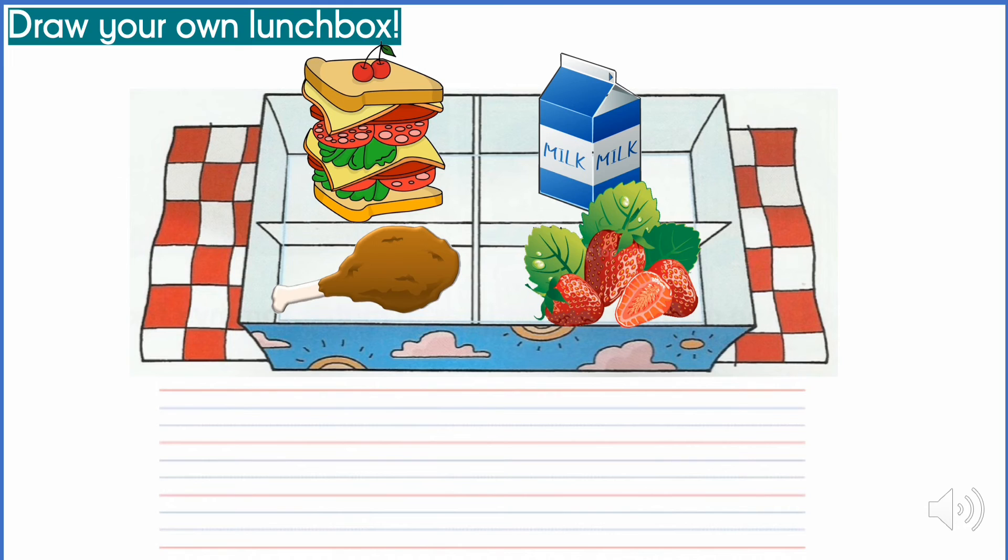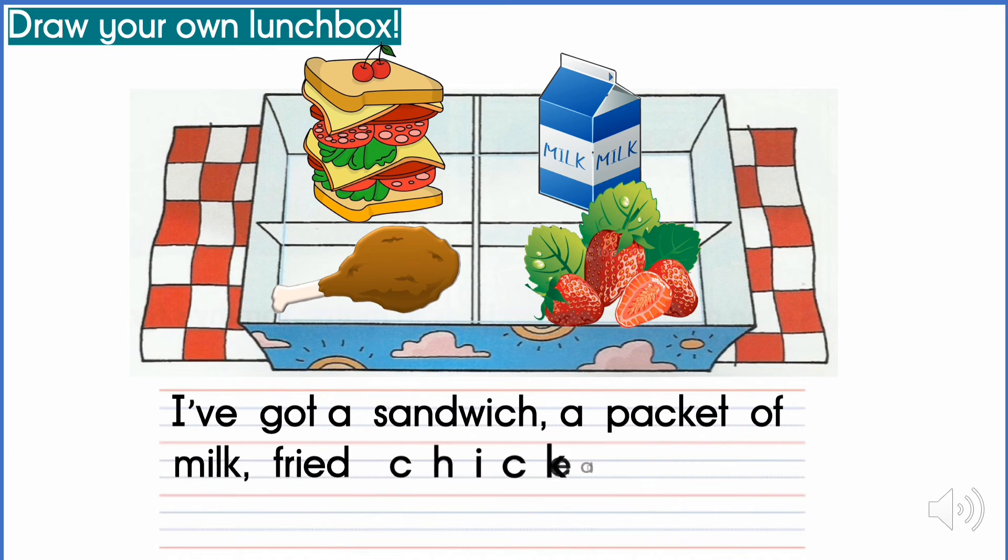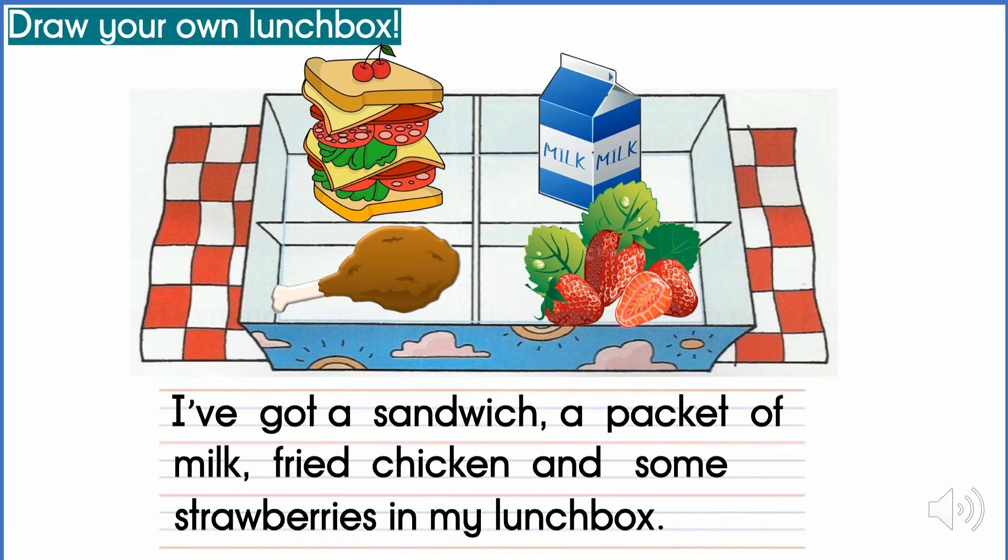After that, you can write a few sentences, alright? Or maybe just write one sentence and talk what you have in your lunch box. For example, you can write it like this. I've got a sandwich, a packet of milk, fried chicken and some strawberries in my lunch box. So you can start your sentence with what we've learned today, which is I've got. So you can write what you have in your lunch box.